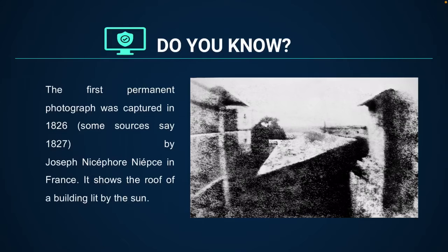Did you know that the first ever permanent photograph was captured in 1826, or some sources say 1827? It was by Joseph Niépce, in France. It shows the roof of a building lit by the sun. The actual photo is being shown here — it is a black and white photo on a silver plate.